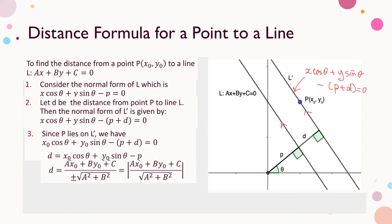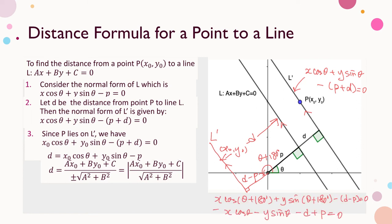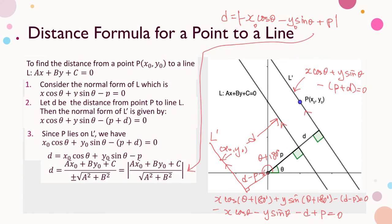Since d must be non-negative, we take the absolute value. Considering the situation where the point (x₀, y₀) is on the other side of the line, the angle of the normal becomes θ + 180° and the length of the normal is d − p. Working through the normal form of l′, rearranging and substituting the point, and taking the absolute value, d is still given by the same expression. This is the formula for the distance from point (x₀, y₀) to the line ax + by + c = 0.